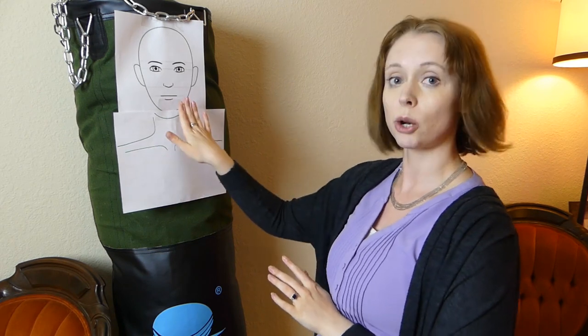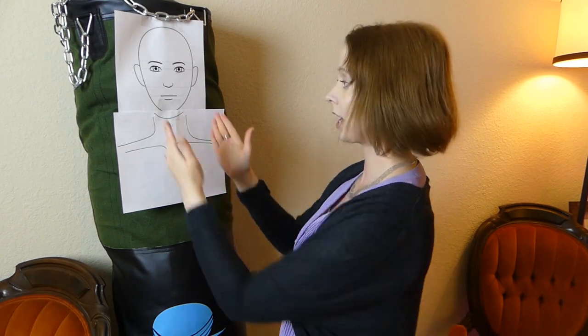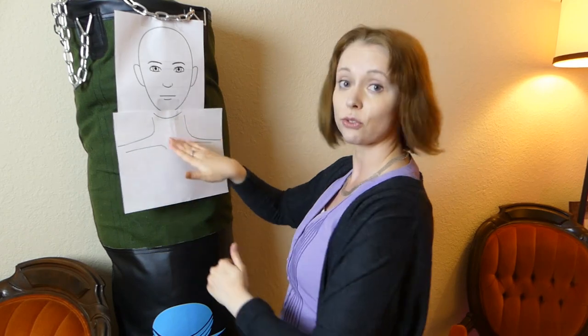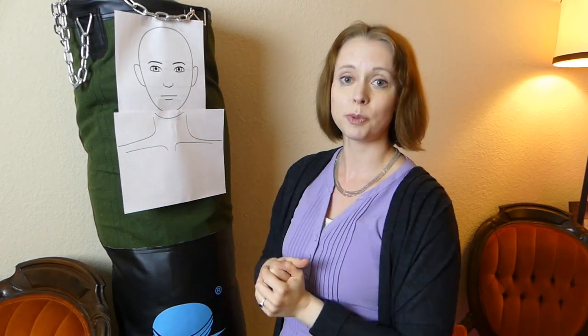So let's go ahead and start with the throat. You have two main areas to work with when you're dealing with someone's throat. You have the sides and the front. So let's go ahead and talk about the sides because in most self-defense situations that's the easiest to get to, especially for large sweeping motions.